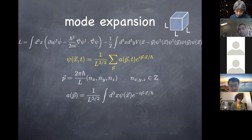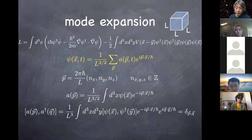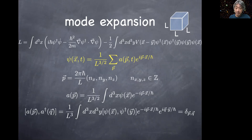You can do an inverse Fourier transform to write a(p) as a function of psi integrated over space with the opposite phase of the plane wave factor. You can then plug psi into this Lagrangian and work it out. We can also work out the commutation relation between a and a-dagger using the canonical commutation relation between psi and psi-dagger. Plugging in the inverse Fourier transform, noting that the psi psi-dagger commutator is a delta function between x and y, I can immediately perform the y integral.